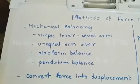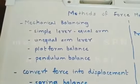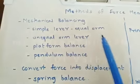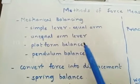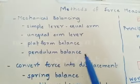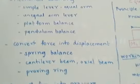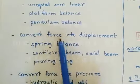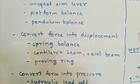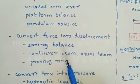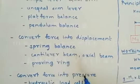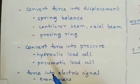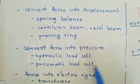Now we will see the methods of force measurement. In the first method, we use mechanical balancing—it involves the use of simple levers, equal arm type of simple lever, platform balance, and pendulum balance. In the second method, force is converted into displacement—spring balance, cantilever beam, axial beam, proving ring are a few examples. In the third method, convert force into pressure and then measure the pressure—